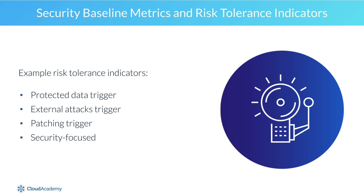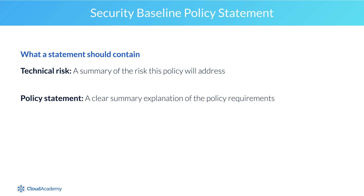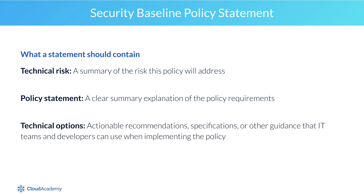Security baseline policy statements should be concise and to the point. Each statement definition should include the following pieces of information: technical risk — a summary of the risk this policy will address; policy statement — a clear summary explanation of the policy requirements; and technical options — actionable recommendations, specifications, or other guidance that IT teams and developers can use when implementing the policy.